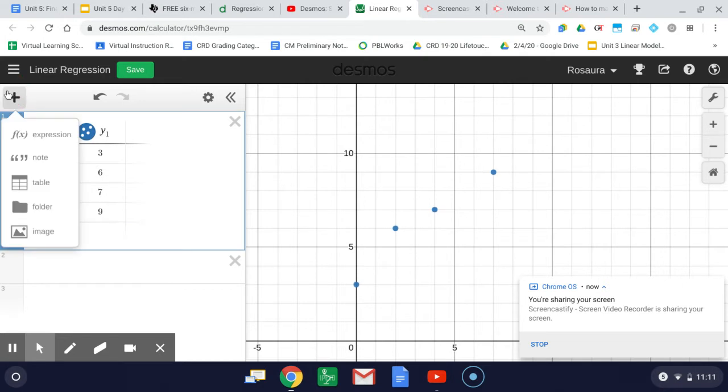so I can actually create a linear regression line to help me create an equation. The way you do this is you click on the plus button, fx expression,